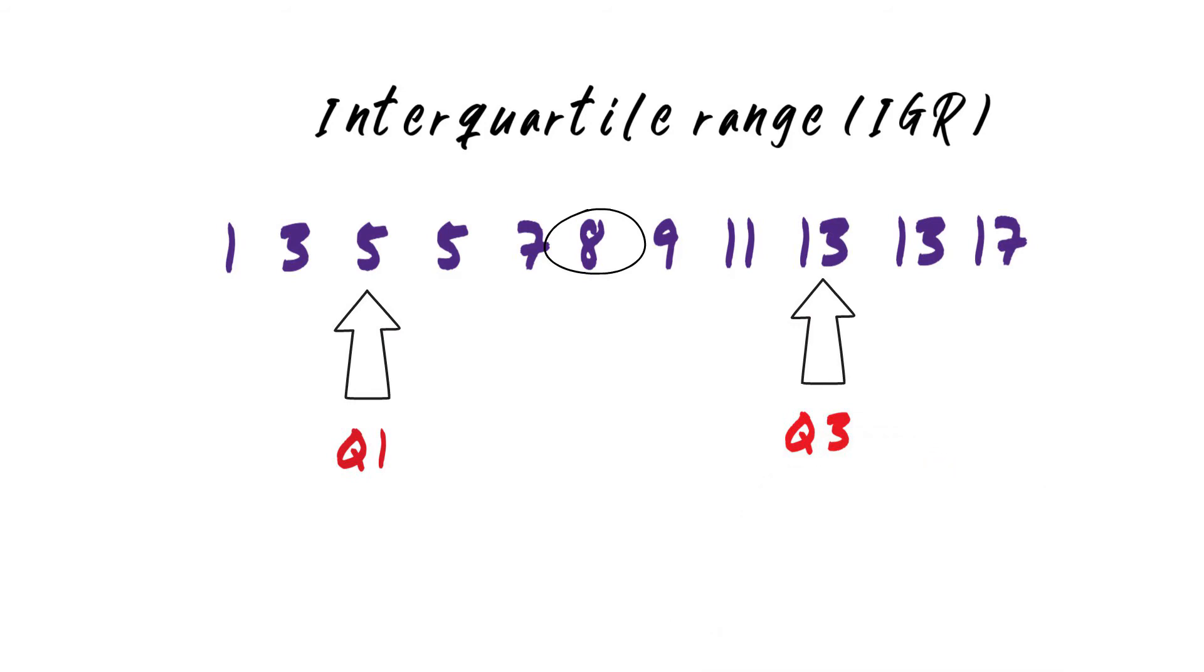Our median is obviously quartile 2. To calculate the interquartile range, take quartile 1 from quartile 3. In our data set, that's 13 minus 5, which is 8. Well, that's it. Thank you for watching!